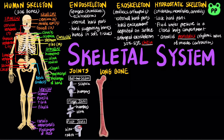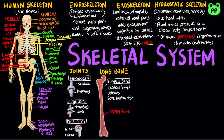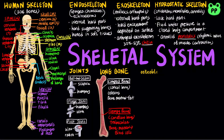A long bone consists of an outer shell of compact bone, also known as cortical bone. It is organized into osteons and appears yellow because its bone marrow stores fat. The inner layer consists of spongy bone, also known as cancellous bone, made of microscopic elements called trabecula. It appears red because its bone marrow contains blood cells. Osteoblasts are cells that secrete bone matrix and thereby build and repair bone, whereas osteoclasts are cells that reabsorb bone components and remodel the skeleton.